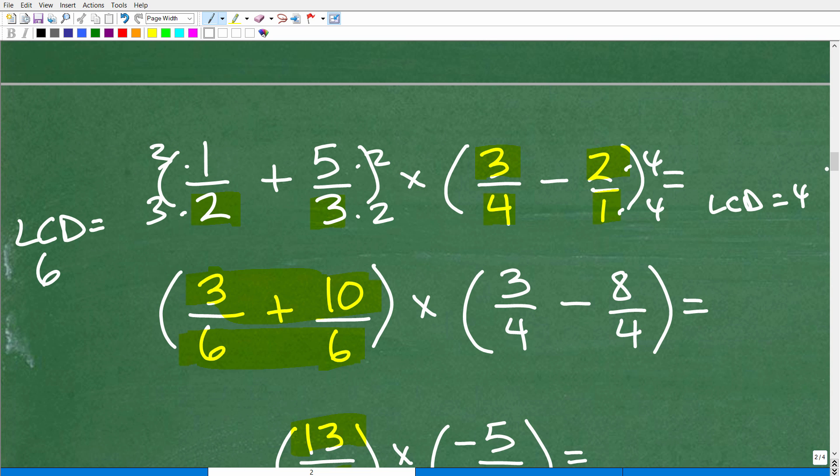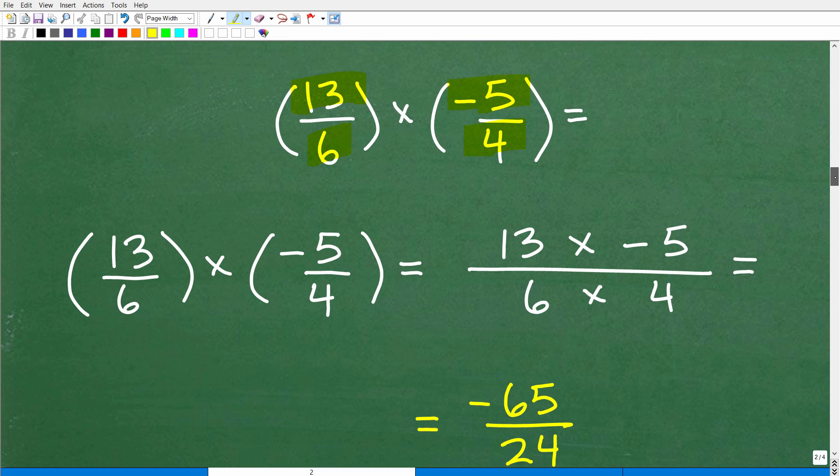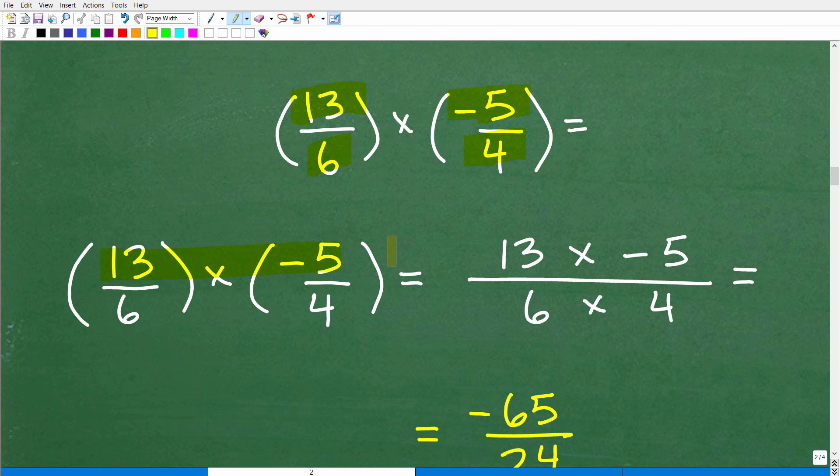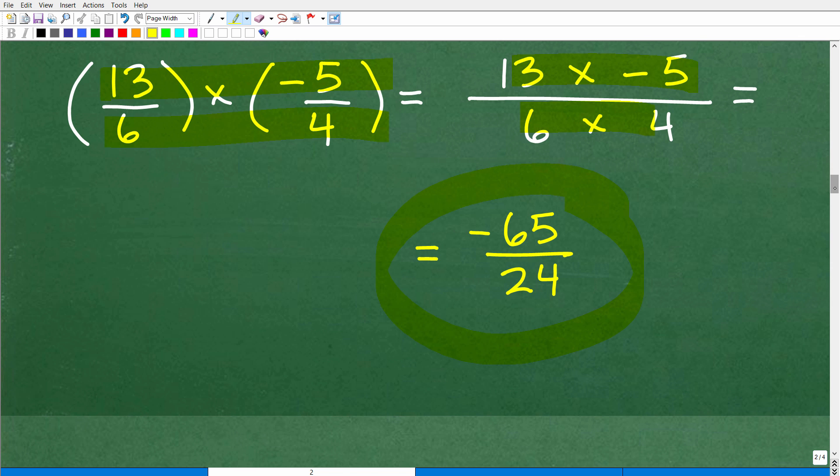And you can see here when we have the same denominator, we simply subtract the numerator. So three minus eight. Be nice and careful. That's negative five-fourths. And guess what? It turns out to be the same thing because now we're just simply multiplying these same fractions and we're going to get the same answer, negative 65 over 24.